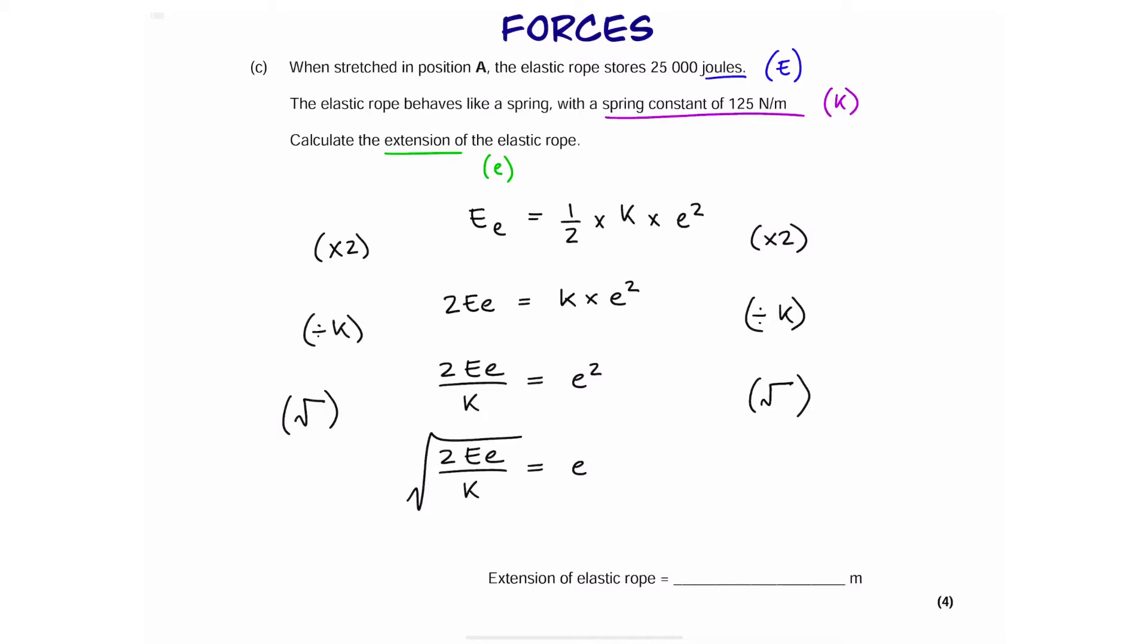Now, to work out extension, all we have to do is plug in the values from the question. So, 2 times 25,000 over 125. And that gives us an extension of 20 meters.